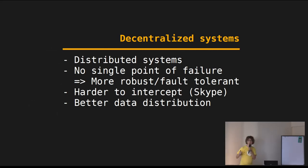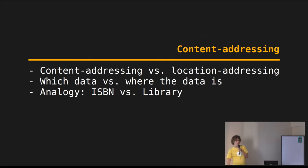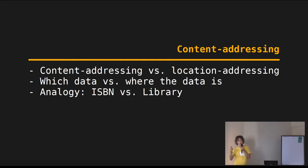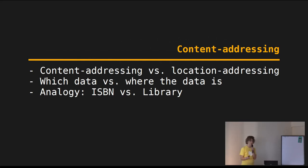You can also distribute your data in a better way, which I'll come to later. The other core concept is content addressing, which is kind of the opposite of location addressing. Content addressing is about which data, as opposed to location addressing, which is about where the data actually is. There's a really nice analogy: content addressing is like an ISBN number.